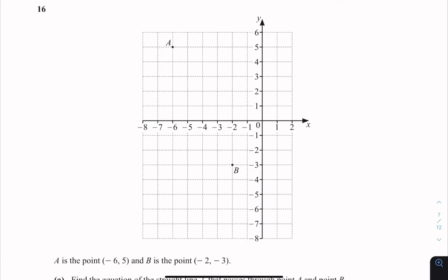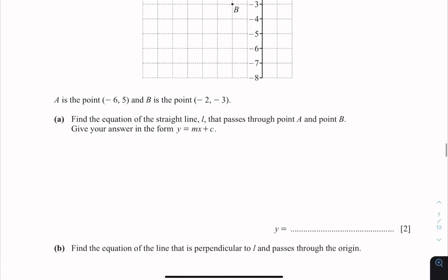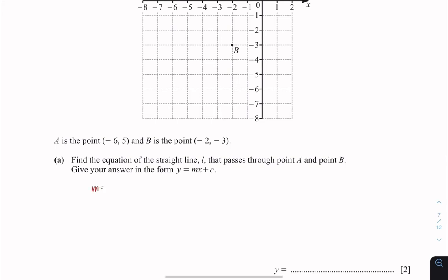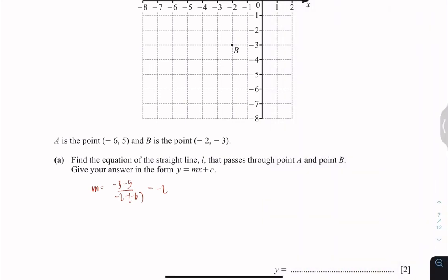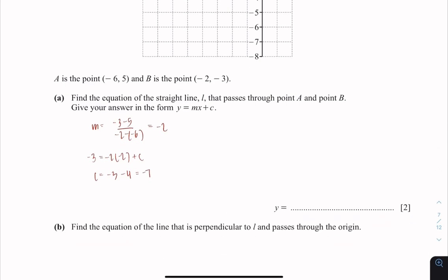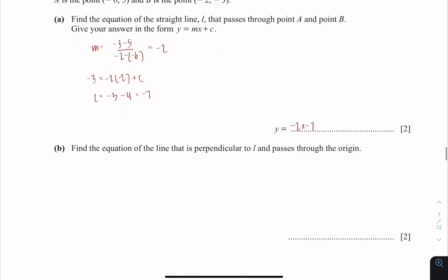Question 16. They want us to find the equation of the straight line. First I'm going to find the gradient by using the formula y2 minus y1 over x2 minus x1, which is giving me negative 2. Now I'm going to substitute one of the coordinates just to find my c. And my c is negative 7. So the equation of the straight line is y equals negative 2x minus 7.